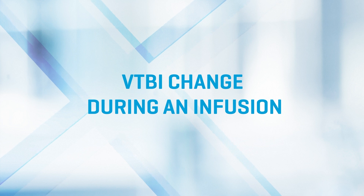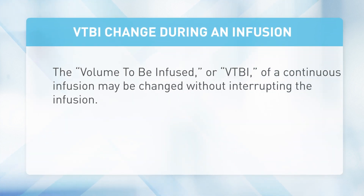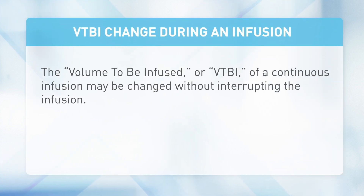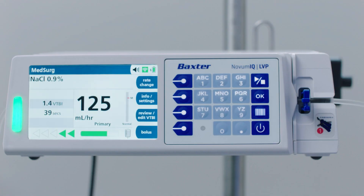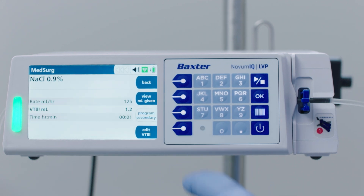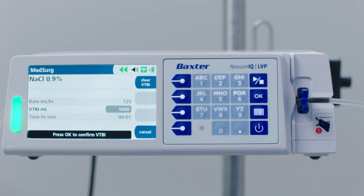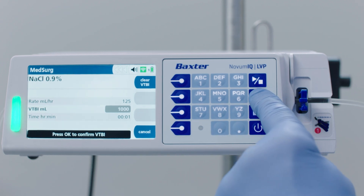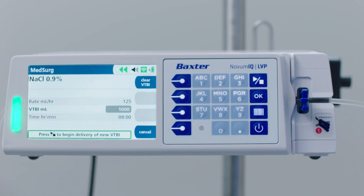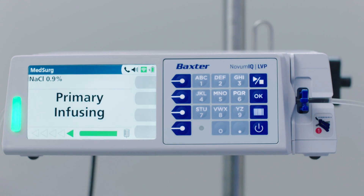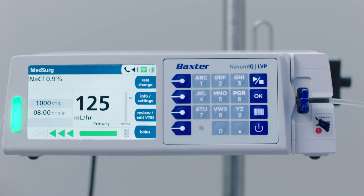VTBI change during an infusion: the volume to be infused, or VTBI, of a continuous infusion may be changed without interrupting the infusion. To change the VTBI while an infusion is running, press the REVIEW EDIT VTBI soft key. The drug setup screen appears. Press the EDIT VTBI soft key, enter the new VTBI, and press OK to confirm. Press RUN-STOP to begin the infusion with the new VTBI. The RUN screen appears with the new VTBI.